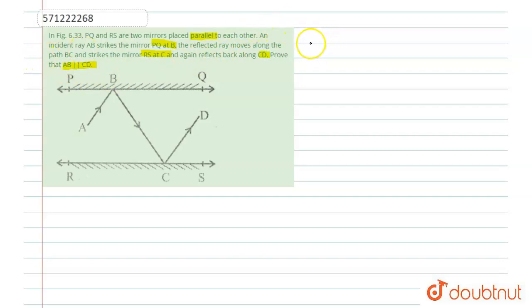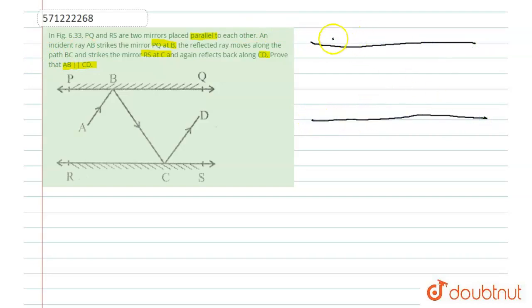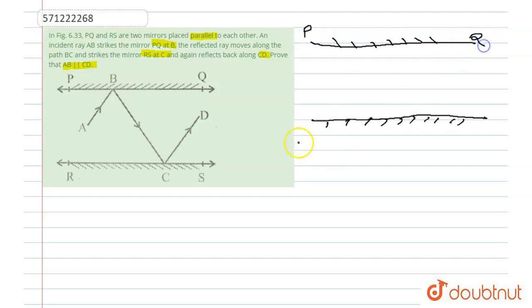We will draw this particular figure once again. This is one mirror and this is the second mirror. Let us name these two mirrors: the name of this mirror is BQ and the name of this mirror is RS.